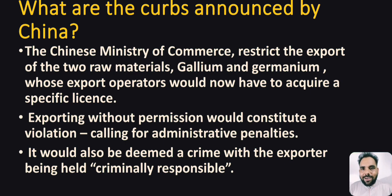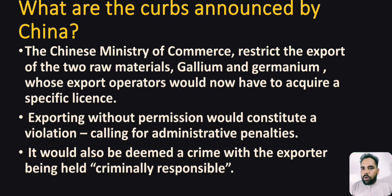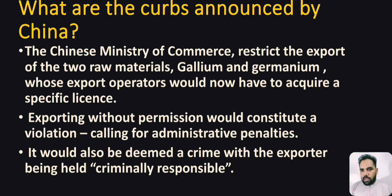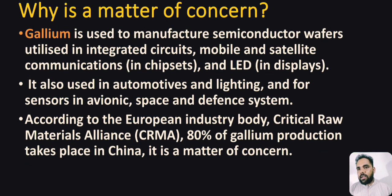The Chinese Ministry of Commerce restricted the export of two raw materials — gallium and germanium — for which export operators would now have to acquire a specific license. Export without permission would constitute a violation calling for administrative penalties, and could be deemed a crime with the exporter held criminally responsible.